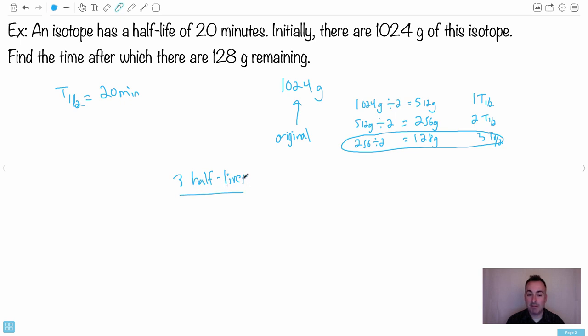Because I know three half-lives have happened, this is actually really easy. Because I know three half-lives have happened, well, how long is each half-life? It's three times 20 minutes. So then I know it's 60 minutes and that's it. That's your final answer. It's that easy. So this is the case.